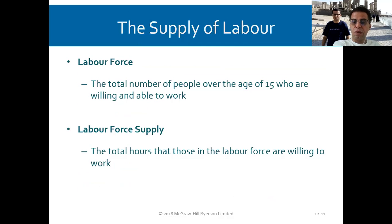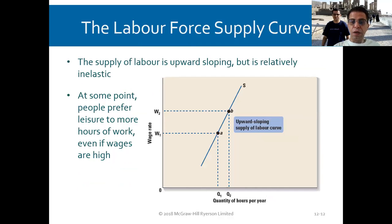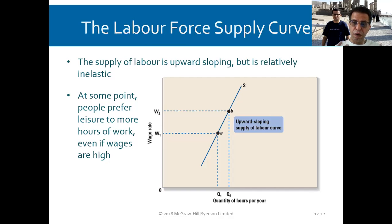The supply of labor: the labor force is the total number of people over the age of 15 who are willing and able to work. The labor force supply is the total hours those in the labor force are willing to work. The labor supply curve is upward sloping but relatively inelastic, because at some point people prefer leisure to more hours of work, even if wages are high.